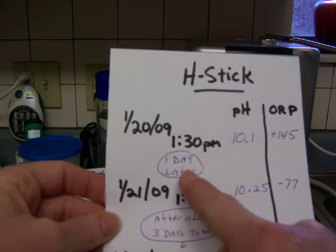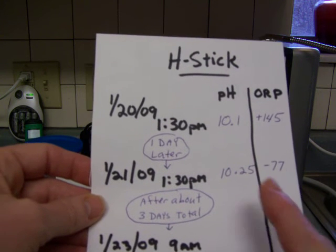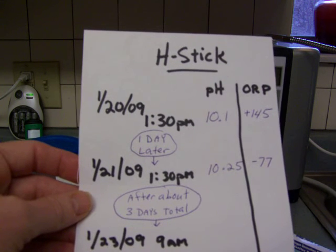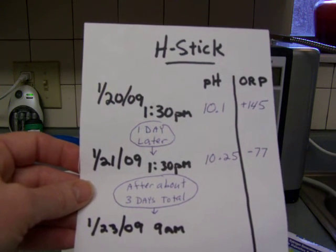After one day of soaking, on the 21st of January, the pH rose a little bit. It went up to 10.25, and the ORP dropped to a negative 77.